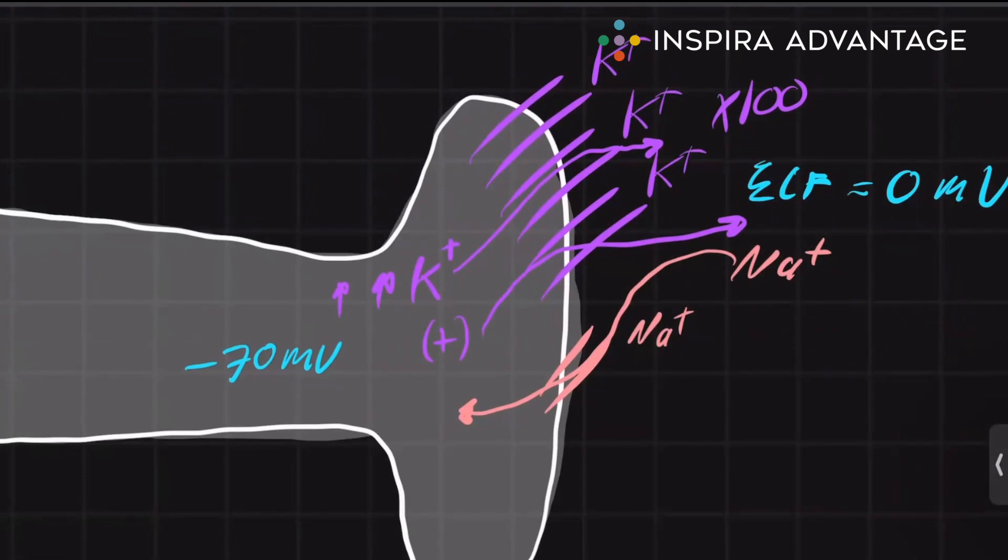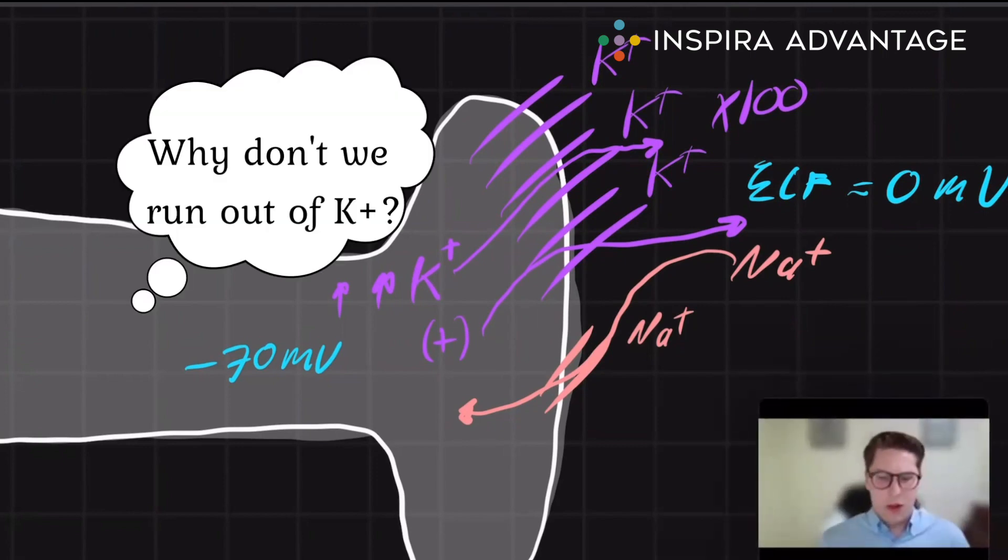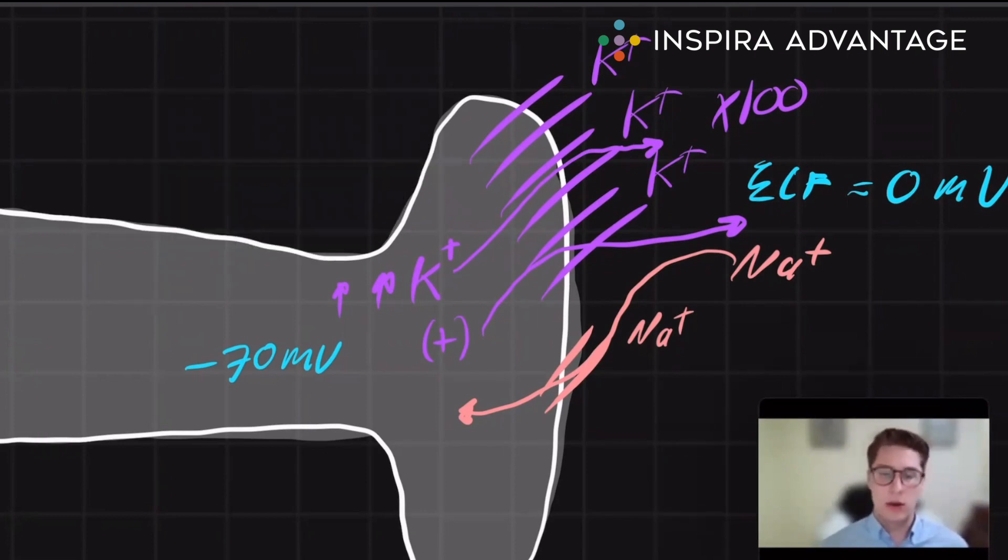But you may now be asking, if all of this potassium is leaking out all the time, well then why doesn't the neuron just run out of potassium?